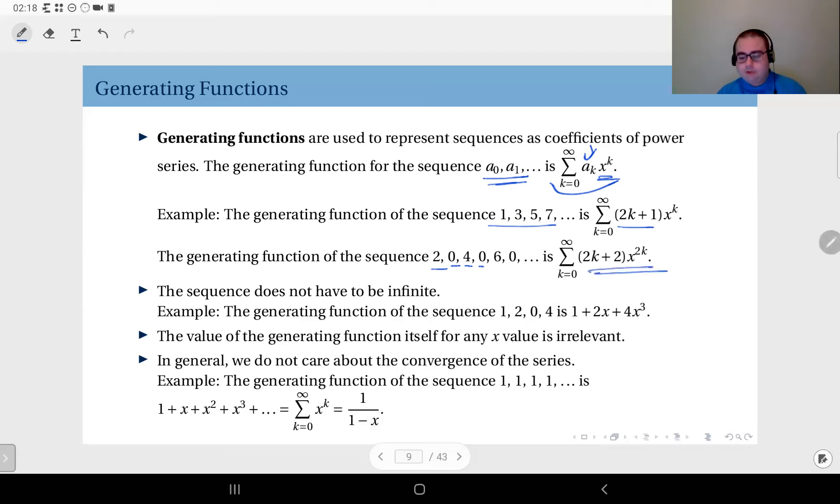Be careful to notice x to the power 2k, because some of these, every other one is 0, so you need to skip one of those. If you expand this for k equals 0, you would get 2k plus 2, that is 2, times x to the power 0, which is 1. Plus, if you put k equals 1, then 2k plus 2 is 4 times x to the power 2k, which is x squared. Plus, k equals 2 gives you 6x to the power 4, and so on.